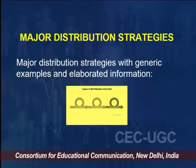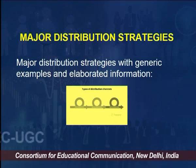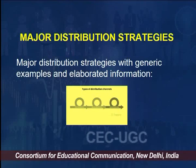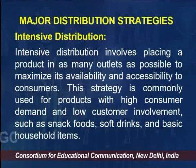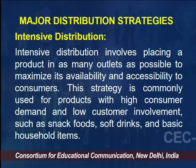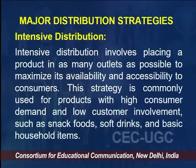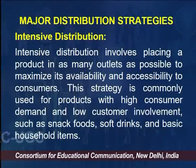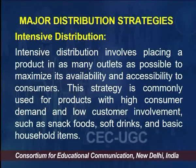We now talk about the major distribution strategies with generic examples. The first is intensive distribution. Intensive distribution involves placing a product in as many outlets as possible to maximize its availability and accessibility to consumers. This strategy is commonly used for products with high consumer demand and low consumer involvement, such as snacks, food, soft drinks, and basic household items. The marketer tries to ensure extensive availability and accessibility in the maximum number of places — that is why we call it intensive distribution.